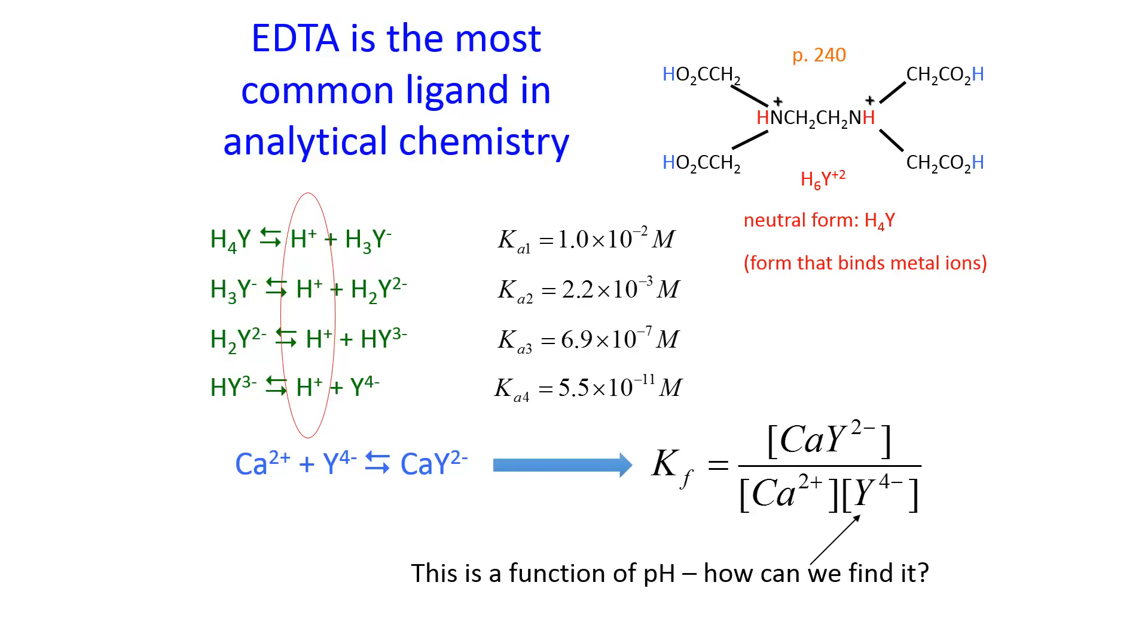And so we need to have some way of accounting for this, that the change in the pH will result in a change in that concentration, which will then result in a change in the formation constant. So we need to know the mole fraction of EDTA that's in each form as a function of pH.